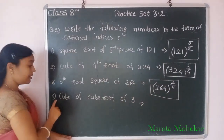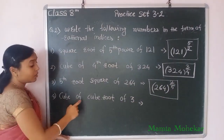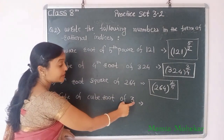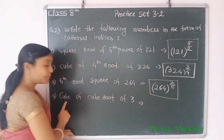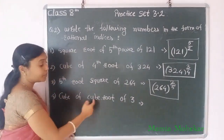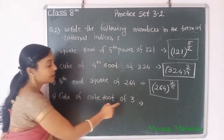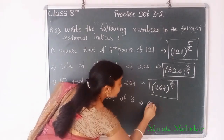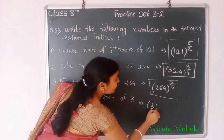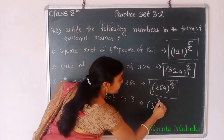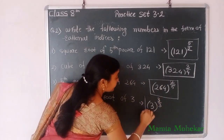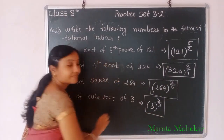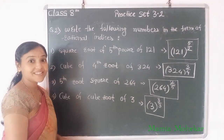Last example: cube of cube root of 3. Cube means 3, cube root also means 3, and the base is also 3. So we write: 3 to the power 3 by 3. Okay, students.